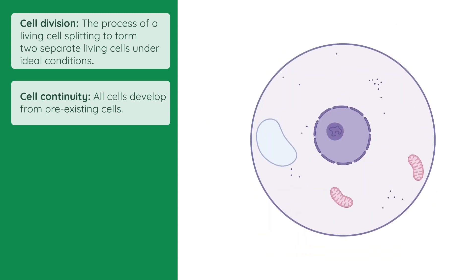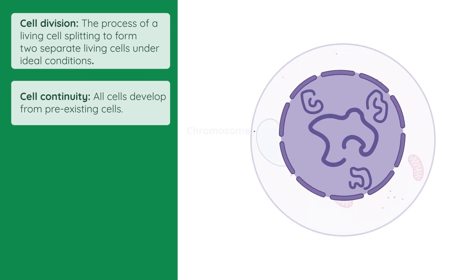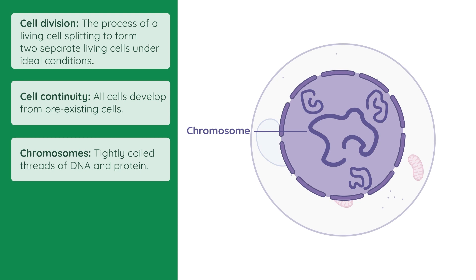Now the nucleus of a cell is critical to the cell's ability to divide. The nucleus contains chromosomes, which have all of the necessary information for the production of a new cell. Chromosomes are tightly coiled threads of DNA and protein, which become visible in the nucleus of a cell at cell division. Chromosomes are a very efficient way of carrying genetic information.